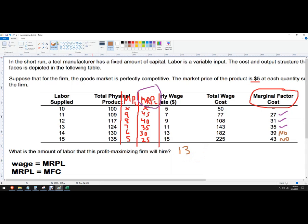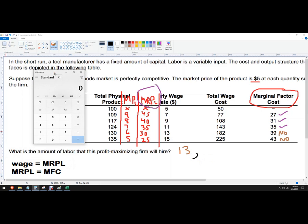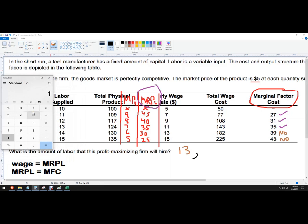This question didn't ask it, but in case you run into that question, are they earning a profit or loss? We could figure that out by multiplying the price times the output if I hire that many workers. So if I hire 13 workers, I'm going to get 124 units times 5, so that's 620.